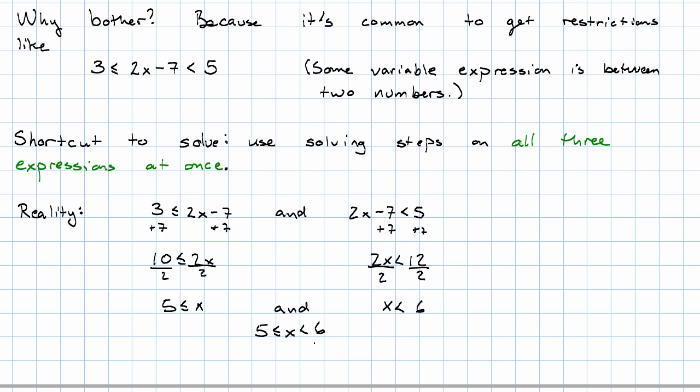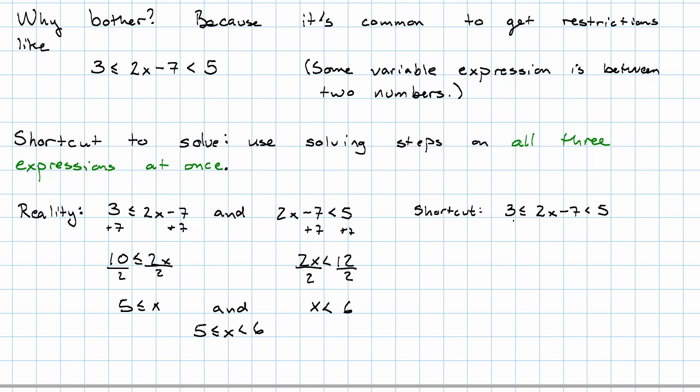What does the shortcut look like? Well, we add 7 to all three expressions at the same time. We get 10 less than or equal to 2x is less than 12. We divide all three expressions by 2. And we get 5 less than or equal to x is less than 6.